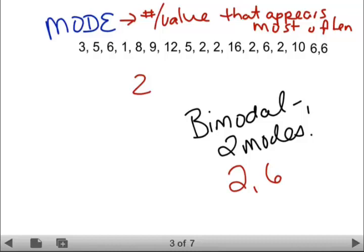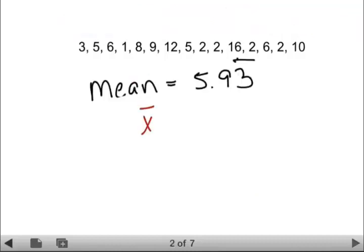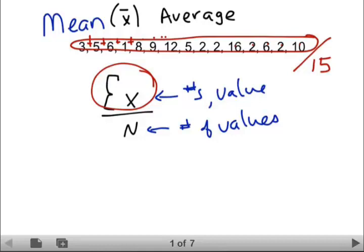So that's the mode. The number or value that appears most often. The mean is you add them all up and divide by the number you have, so that's your average.